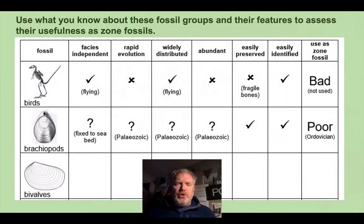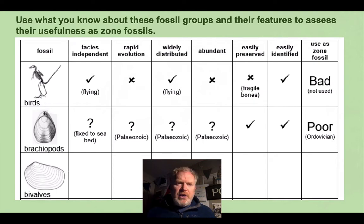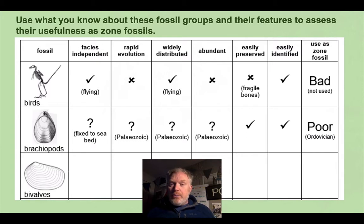On your handout, you'll see the main characteristics of good zone fossils listed at the top of this table. Down the left hand side, we've got the different groups of fossils that we study. What I'd like you to do is think about each of these groups in terms of whether they're facies independent, whether they evolve rapidly, whether they're widely distributed, their abundance, their preservation, their identification — and from that, try and evaluate whether they're any use as a zone fossil.